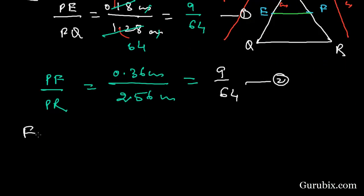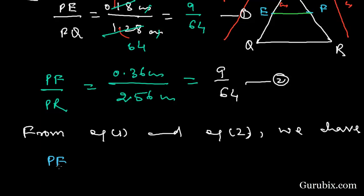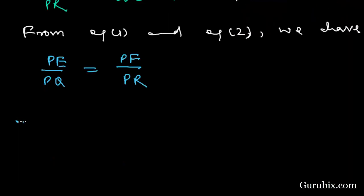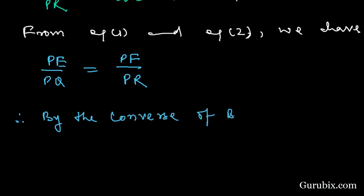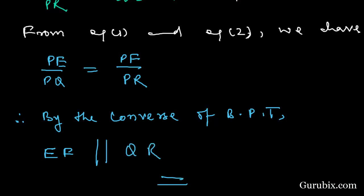From equation number 1 and equation number 2, we have PE over PQ equals PF over PR. Therefore, by the converse of the Basic Proportionality Theorem, EF is parallel to QR. Thank you.